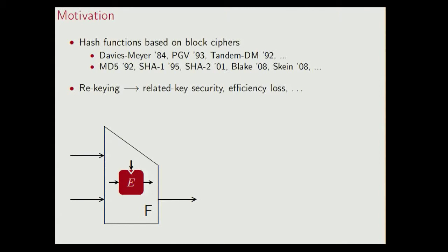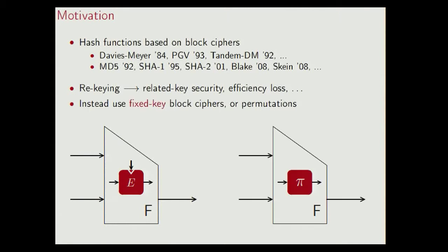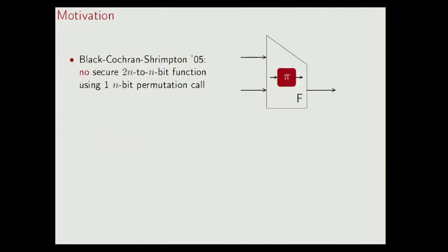As an alternative, people started to look at compression functions based on fixed key block ciphers, or permutations, and this indeed gives some efficiency profit. But on the other hand, this also has a disadvantage. Indeed, unlike block ciphers, permutations do not allow for compression, and in particular, it has been proven by Black et al. that this construction cannot be secure.